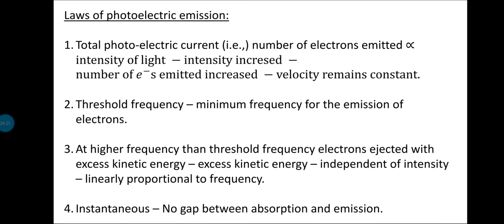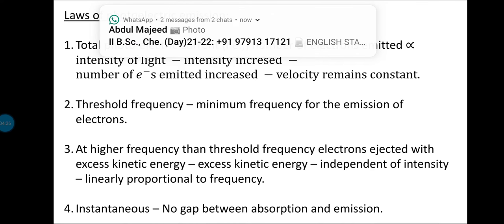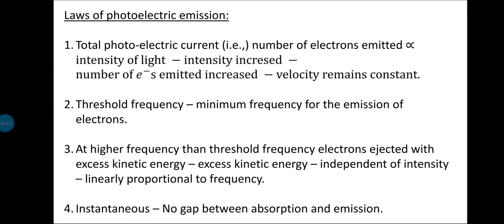If you increase the intensity of the incident radiation, the number of electrons ejected from the metal increases. Remember that the velocity of the electrons is not changed if you increase the intensity. So the number of electrons emitted is directly proportional to the intensity of light.